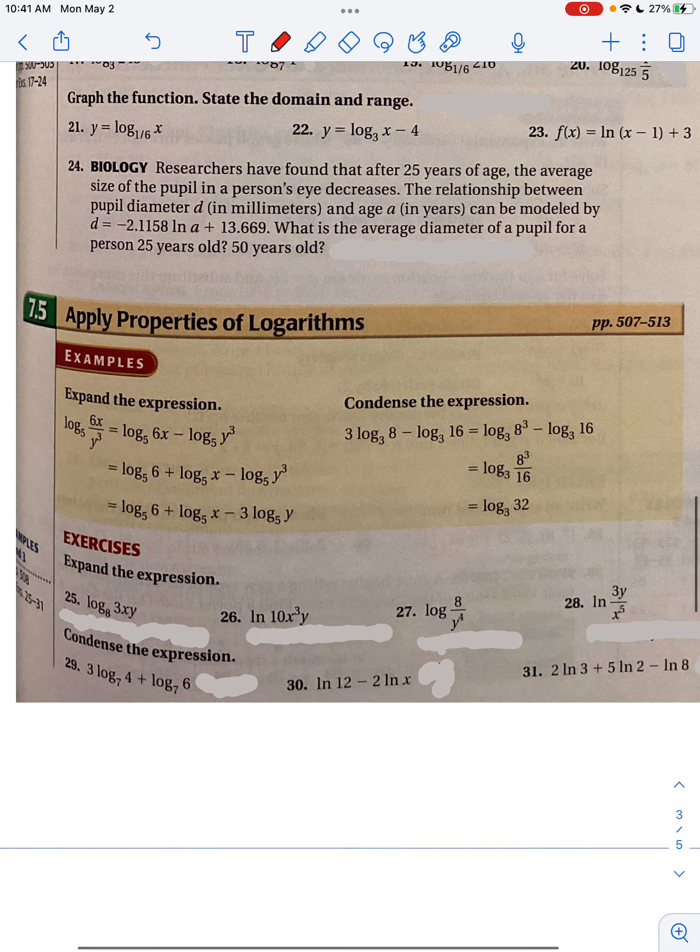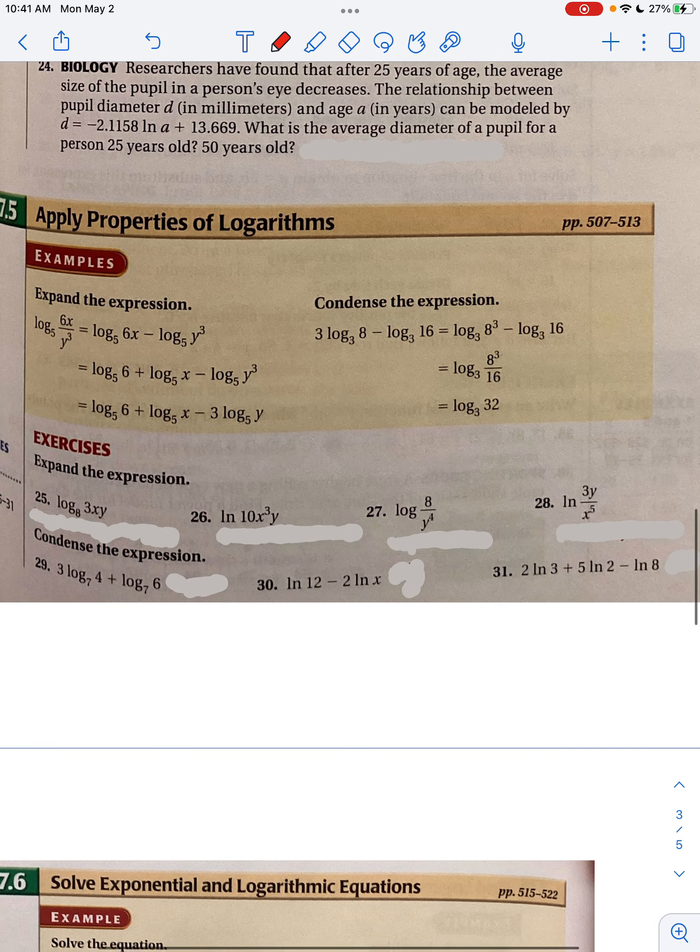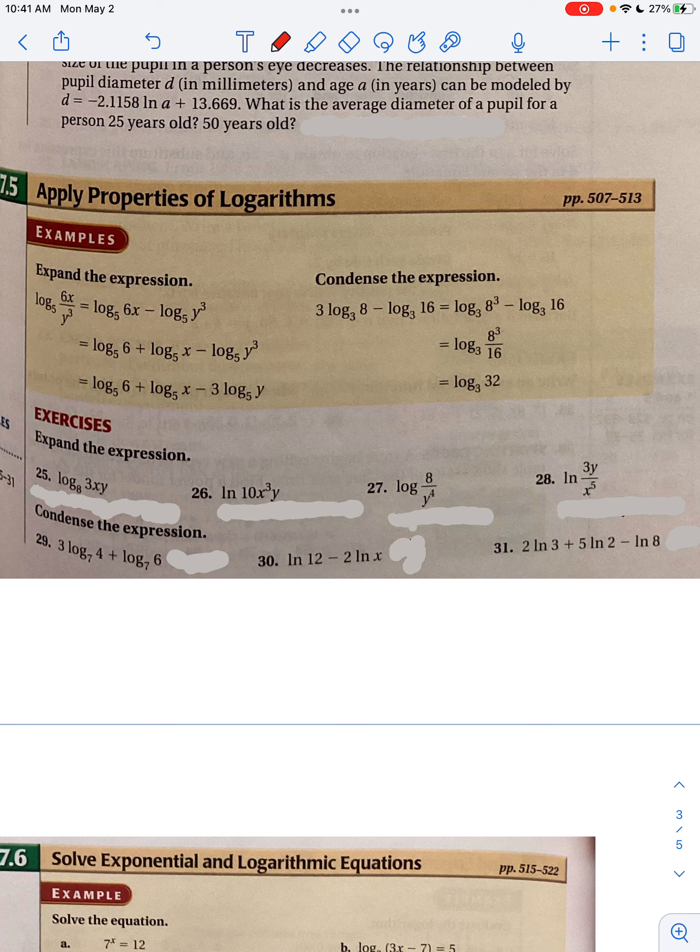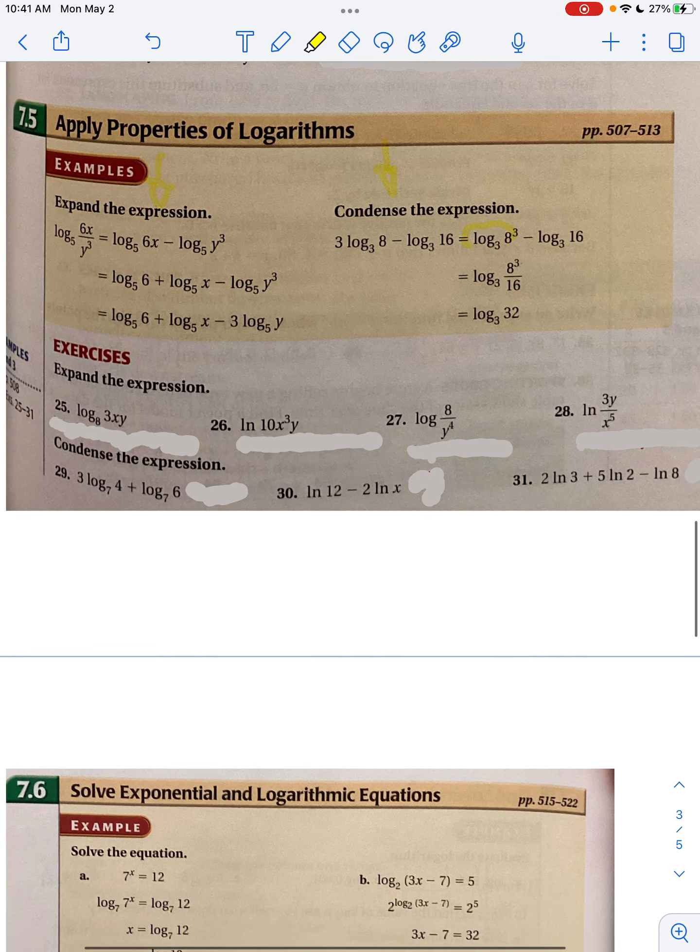That's what we're talking about here in part 5, applying properties of logarithms. Taking this exponent and moving it out in front, or expanding the expression like we can see on the left, and then condensing the expression on the right. You will have to be able to do both of those. That's using the properties that are always true and always happening with logarithms.